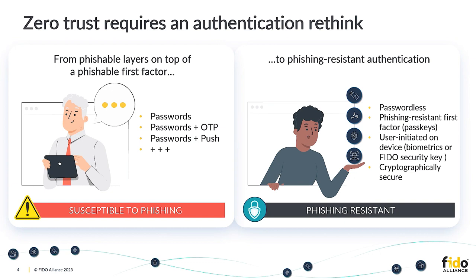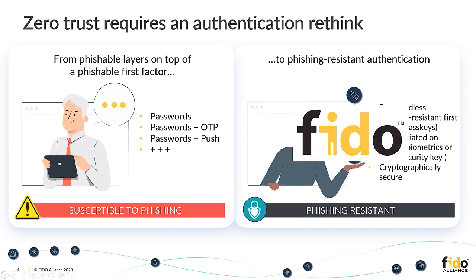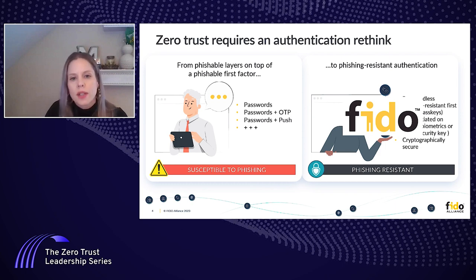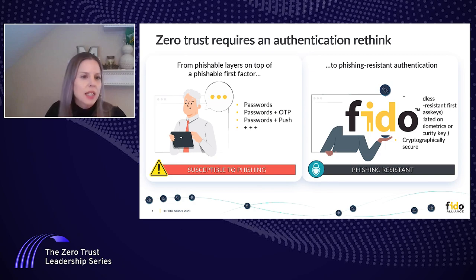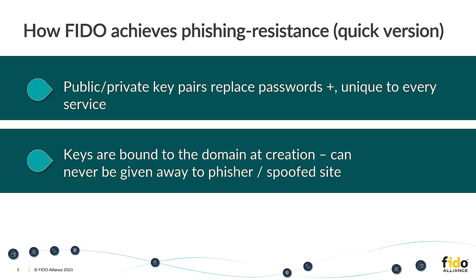We need to move to actually replacing the phishable first factor with something that's fundamentally phishing-resistant and strong. That is what we're doing at the FIDO Alliance — these are the standards we're aiming to create and see mass adoption for. Phishing-resistant authentication is the term I would love to see us all using on a regular basis, instead of terms like strong authentication or MFA. It is phishing-resistant authentication that we need to get to if we're ever going to achieve zero trust. The FIDO approach leverages public key cryptography and user-initiated sign-ins with your device capabilities, whether that's a biometric, on-device PIN, or an external FIDO security key.